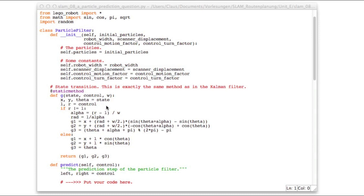So down here is the function g for the state transition. And this is just copied from the Kalman filter class, with the exception that down here, I return a tuple instead of a numpy array, so that we don't have to import numerical python this time.